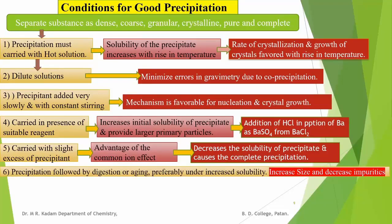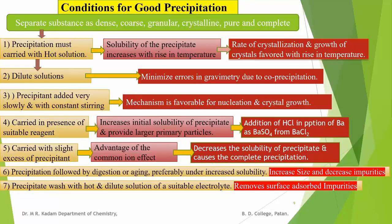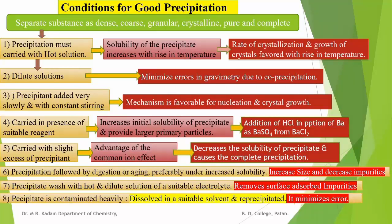The sixth condition is that precipitation should be followed by digestion or aging, preferably under increased solubility. This increases the size of the precipitate and decreases the impurities due to surface adsorption. Then, the precipitate is washed with a hot and dilute solution of a suitable electrolyte, which removes the impurities adsorbed on the surface of the precipitate. If washing fails to remove impurities or the precipitate is heavily contaminated, it must be re-precipitated. In re-precipitation, the precipitate is dissolved in a suitable solvent and again precipitated with the same precipitant. This minimizes the error in gravimetric analysis.